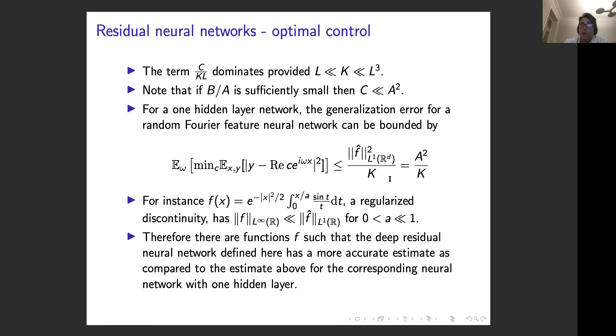The generalization error of a random Fourier feature shallow neural network (one hidden layer) can be bounded by a²/K. For our deep network, provided b/a is small enough, C is much smaller than a², so the leading term for the deep network is actually much smaller than for the shallow network. This is indeed the case for functions like the sine integral — a regularized discontinuity — where the L∞ norm of f is much smaller than the L¹ norm of the Fourier transform. We can conclude there are functions where the deep residual neural network has a more accurate estimate than the shallow network.